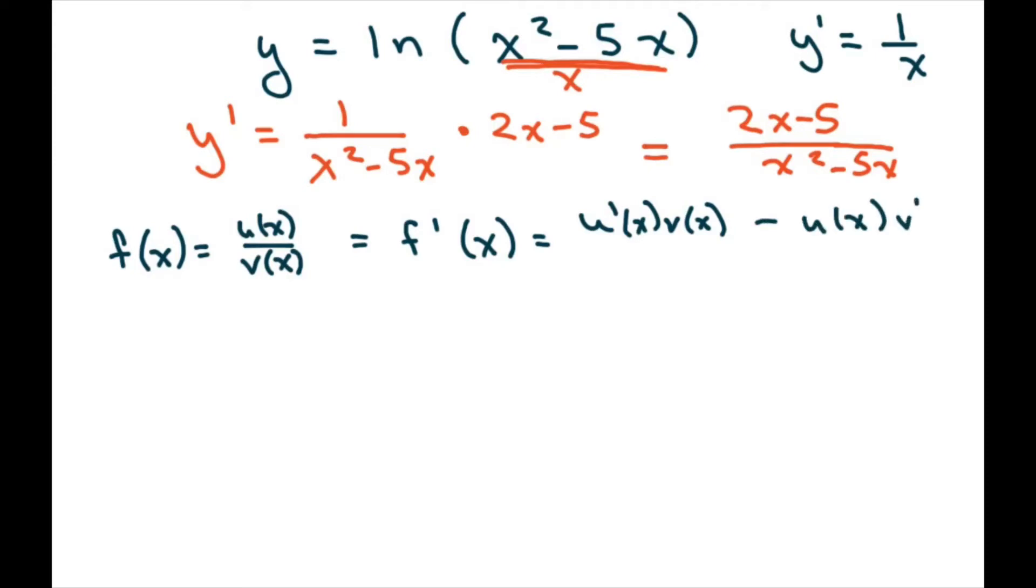And then you just take your denominator, vx, and square it. So we're going to use the quotient property on this. In this case, this would be your ux and the denominator would be vx. So let's start taking the second derivative.